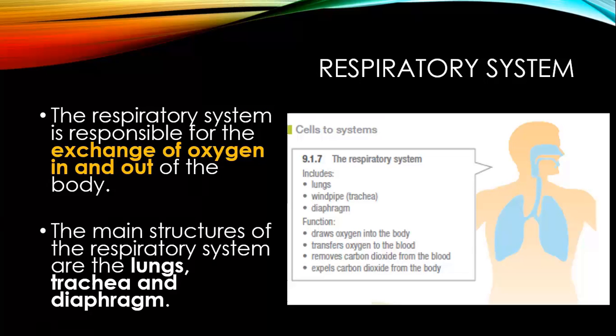Let's look at the different organs that make up the respiratory system, as well as the function of that. The respiratory system is responsible for the exchange of oxygen in and out of the body amongst other gases. The main structures are the lungs, the trachea, and the diaphragm. The respiratory system draws oxygen into the body, transfers oxygen to the blood, removes carbon dioxide from the blood, and then expels that carbon dioxide from the body.